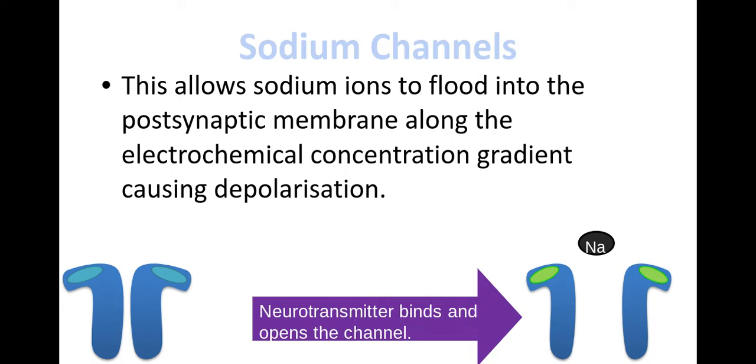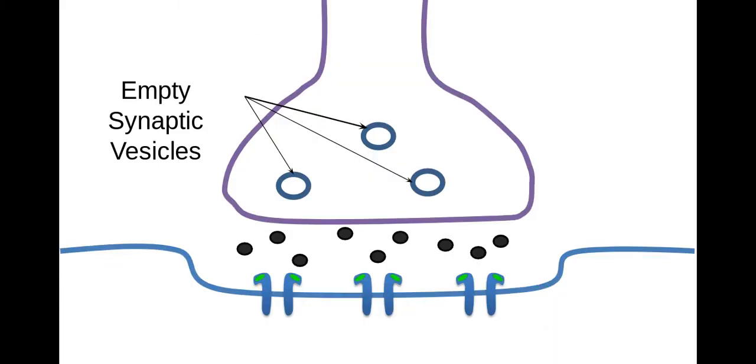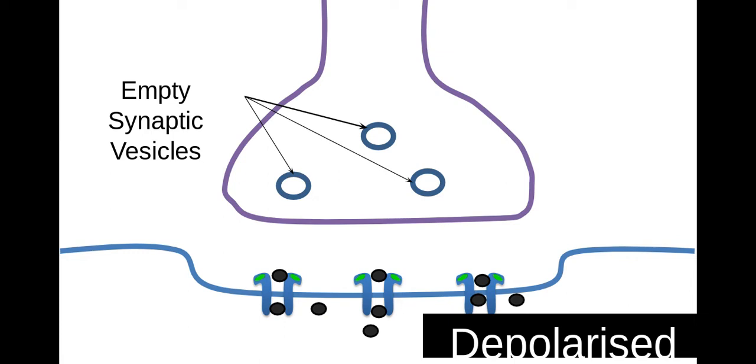Once it's diffused across the synaptic cleft, the acetylcholine binds to receptors on the postsynaptic membrane. These receptors are found on the sodium voltage-gated channels. As acetylcholine binds to these receptors, it causes the sodium voltage-gated channels to open. Sodium rushes in along its electrochemical gradient, depolarizing the postsynaptic membrane. This will trigger an action potential if the change in membrane potential goes above the threshold value.